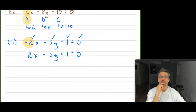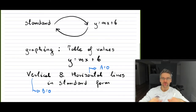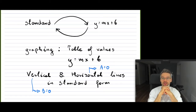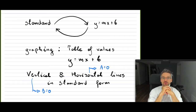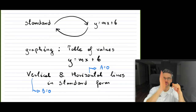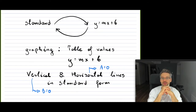With these standard forms, there are several things you should be comfortable with. I want to go over: taking the standard form and changing it back to slope-intercept form, or vice versa. If you are given a standard form, you can graph the lines using a table of values, or you can switch it back into slope-intercept form — I go over the details of graphing in the previous video. For vertical and horizontal lines, the standard form has a special form: for vertical lines B equals zero, and for horizontal lines A equals zero.